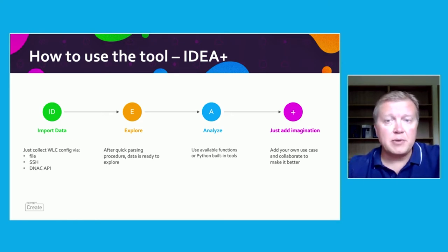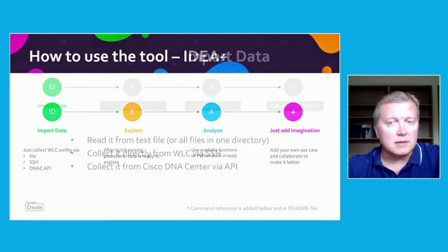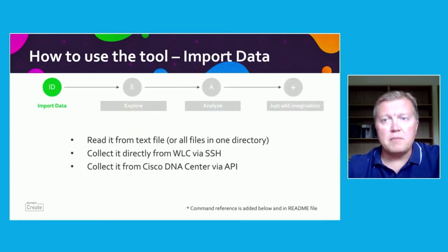Let's go step by step and start with importing the data. There are three main ways to import the data: read it from file, collect it via SSH from the controller, or use API in Cisco DNA Center. I will show you a short demo of data import.